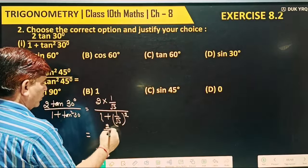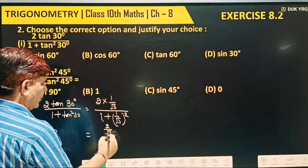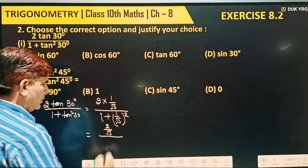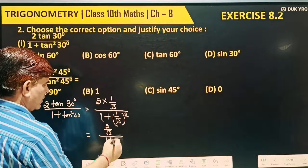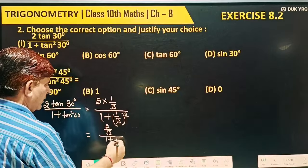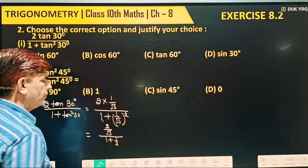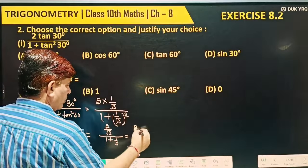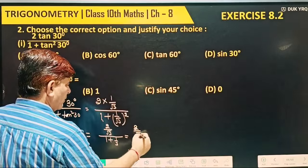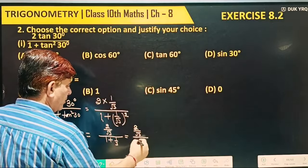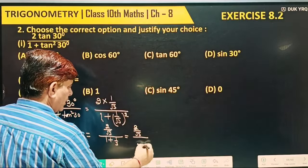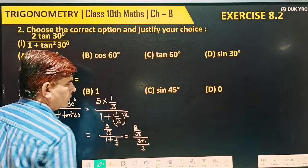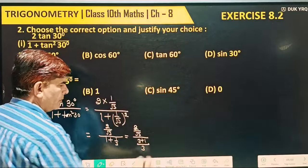So the numerator is 2 by root 3. And the denominator is 1 plus 1 by 3. Taking LCM as 3, the denominator becomes 3 plus 1, which is 4 by 3.